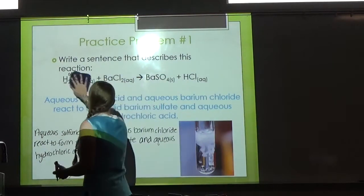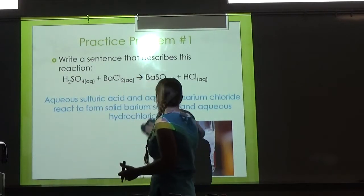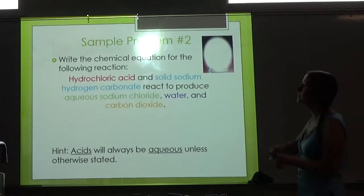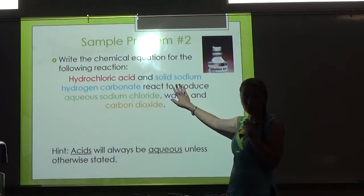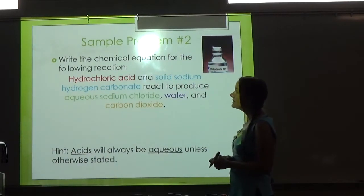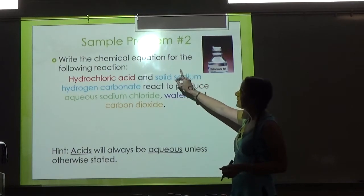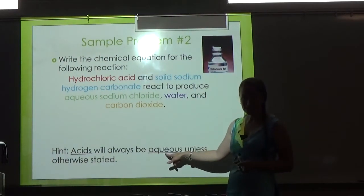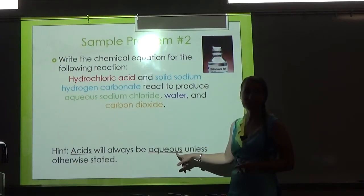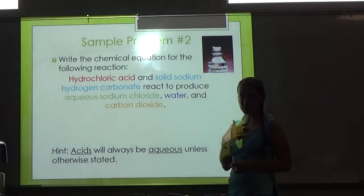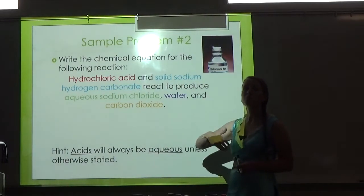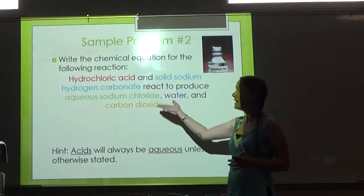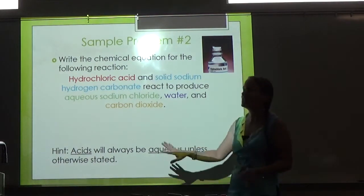Sometimes I'll give you the word equation and ask you to write the chemical equation. So let's look at how that works. Write the chemical equation for the following reaction: hydrochloric acid and solid sodium hydrogen carbonate react to produce aqueous sodium chloride, water, and carbon dioxide. Hint: acids will always be aqueous unless otherwise stated. Sometimes I will leave out states of matter, meaning it's the usual state of matter.